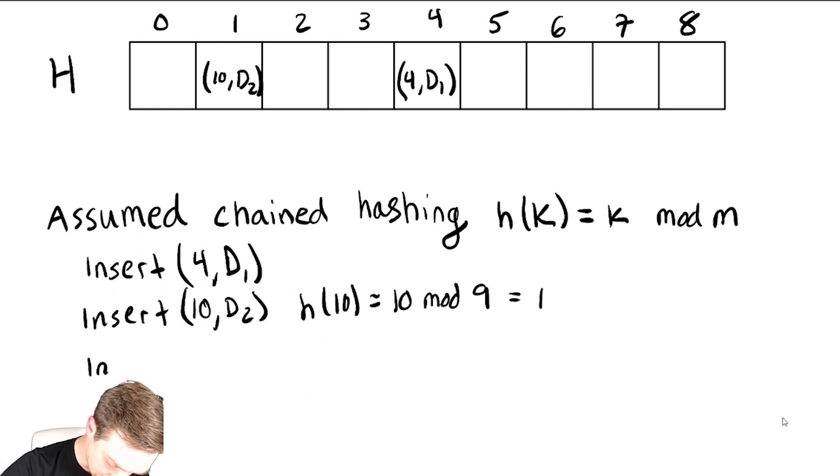So this is equal to 1. The remainder when you divide 10 by 9 is 1. So we get 10, d2 over there. Then let's say we did an insert of 7, d3. 7 I don't need to do anything with, I just insert it over at location 7, and we get 7, d3.